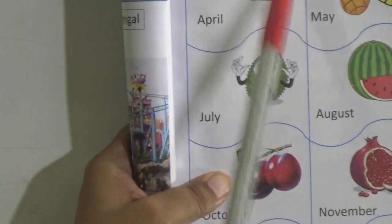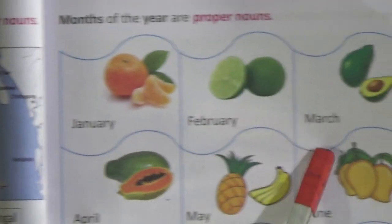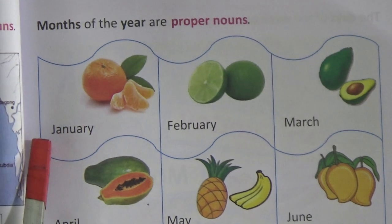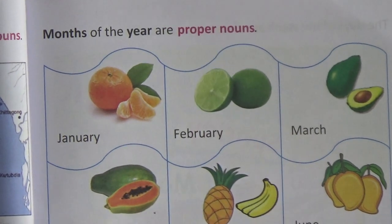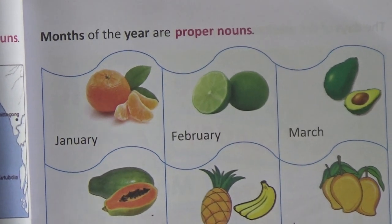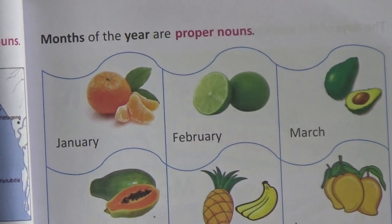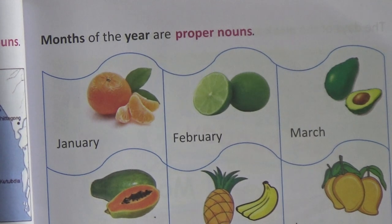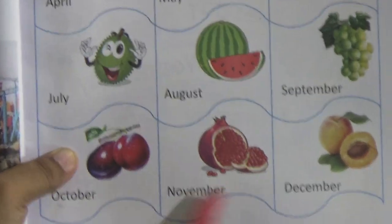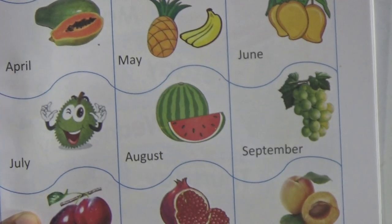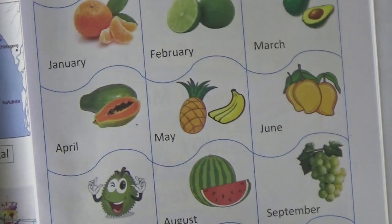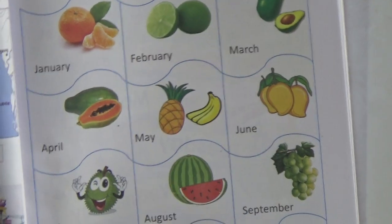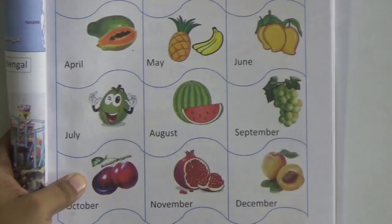And months of the year — they are also naming words: January, February, March, April, May, June, July, August, September, October, November, and December. These are the 12 month names and they are also naming words.